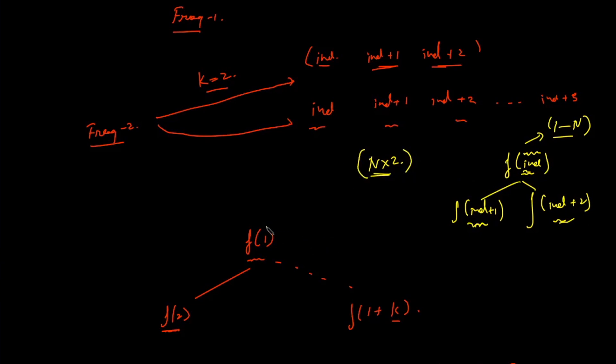But over here, the value of index can lie between 1 and n. And for every given state, we will have k different states at maximum. So we can say the complexity over here will be n times k.